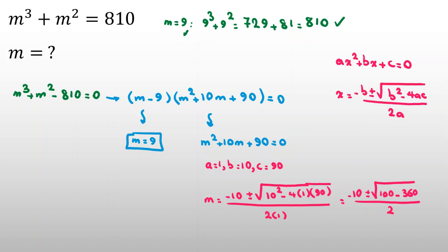In real numbers, we don't have any answer, because inside square root is negative. But if it's solved in complex numbers, negative 10 plus minus square root of negative 260, all over 2. And we can divide it by 2, it will be negative 5 plus minus square root of, because it is inside square root, you should divide it by 4.